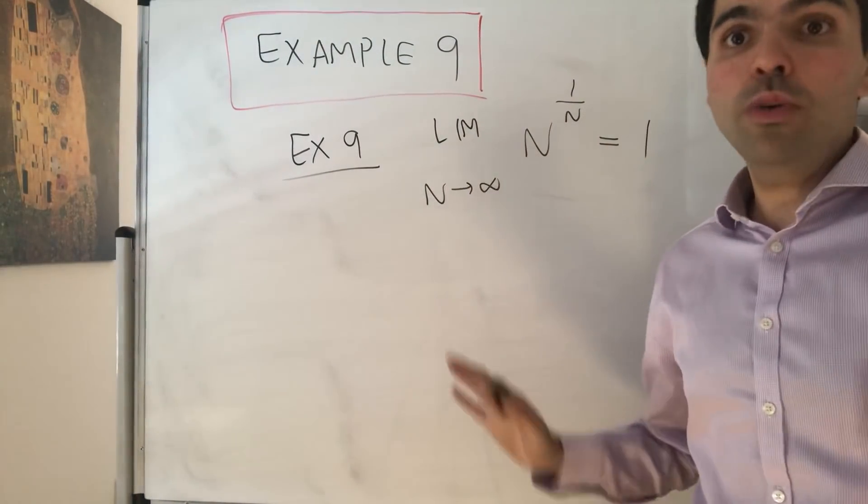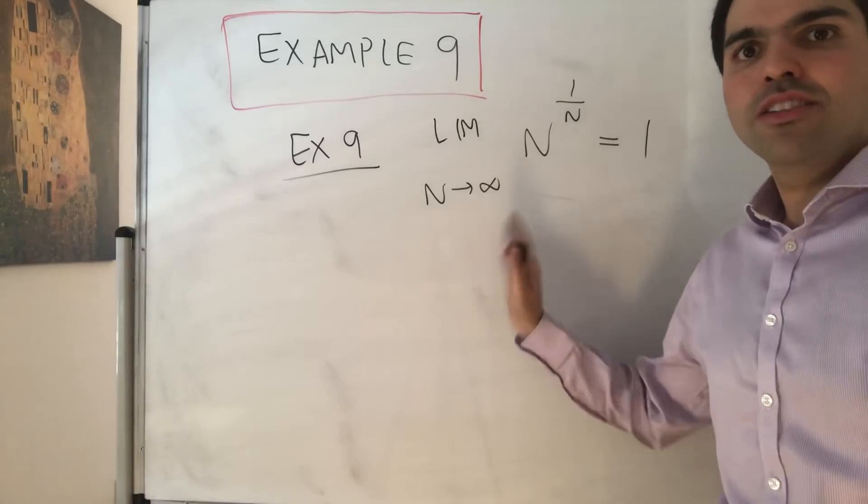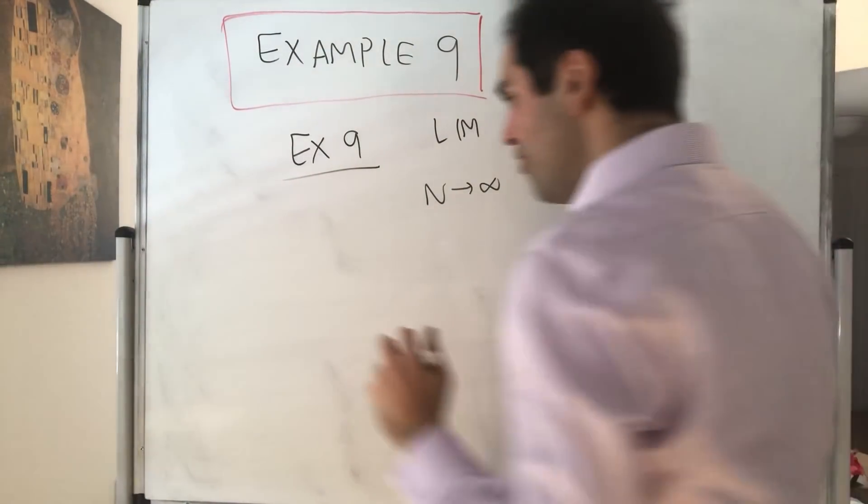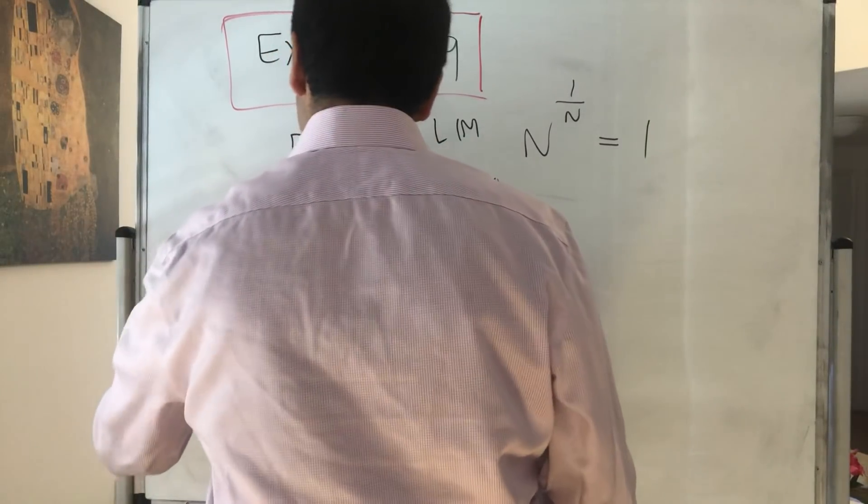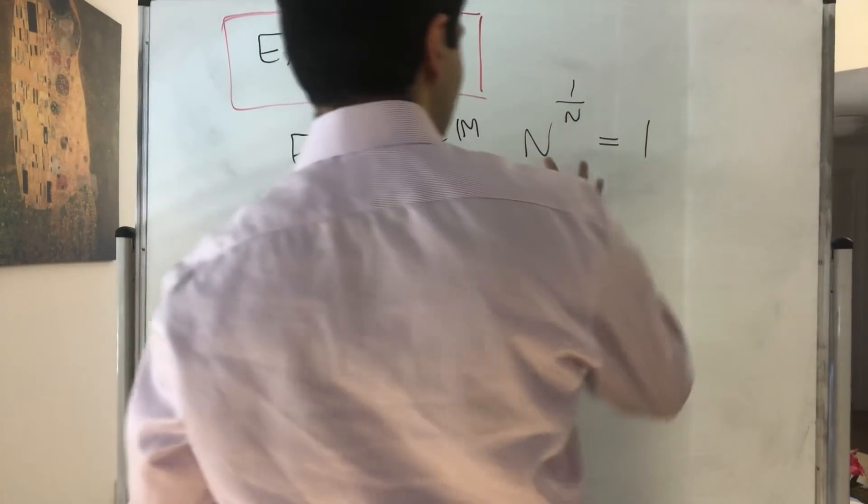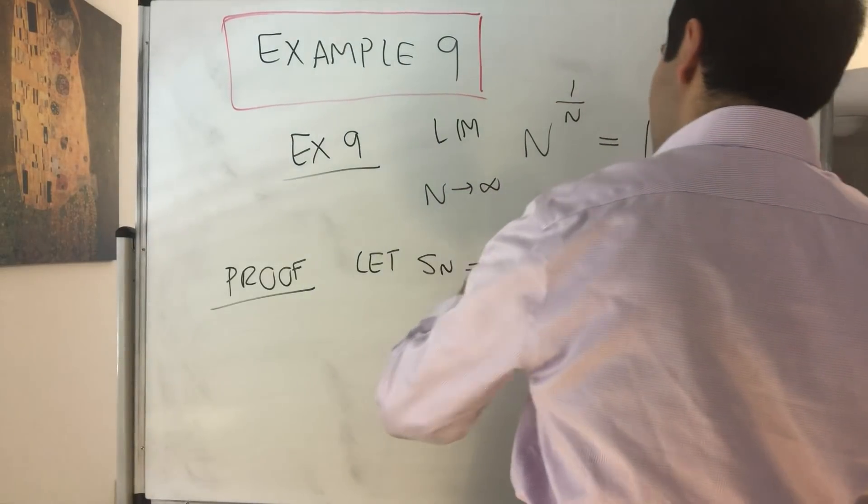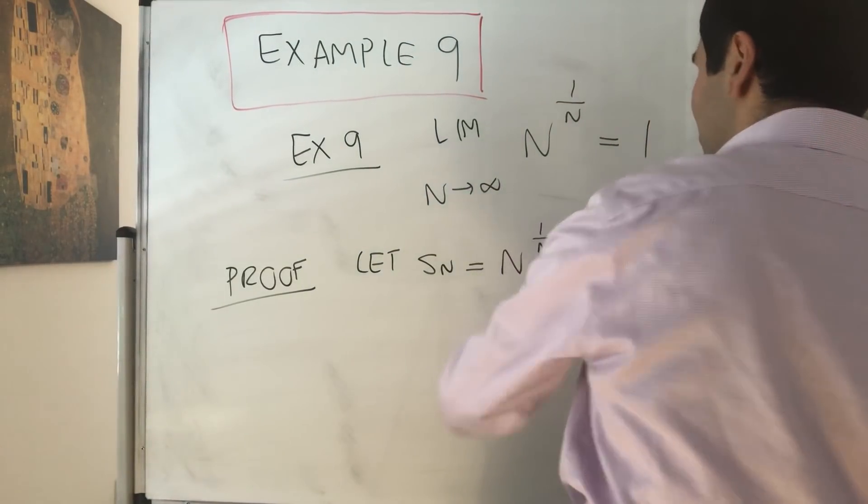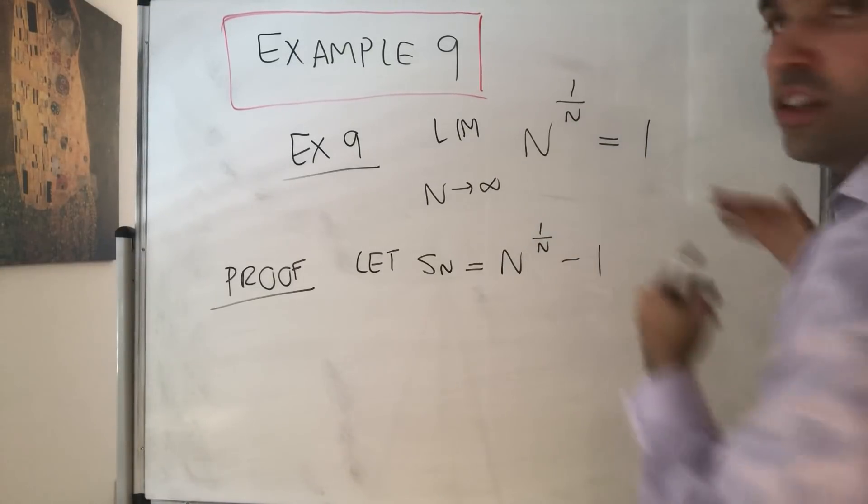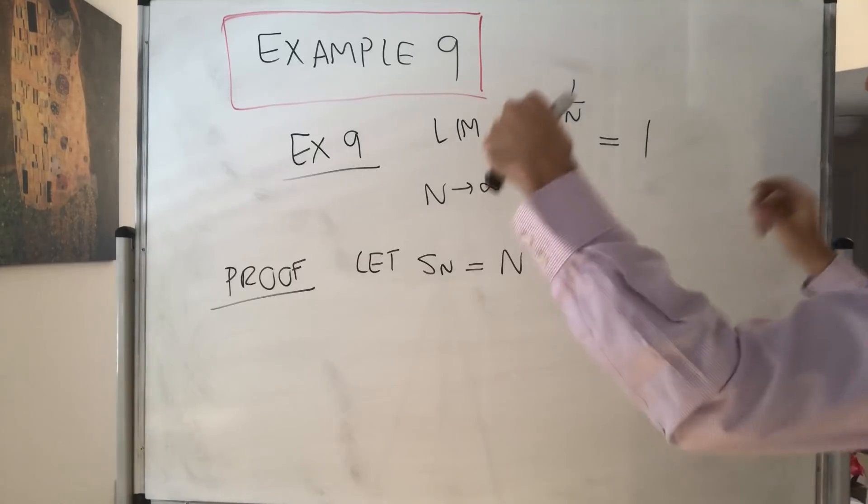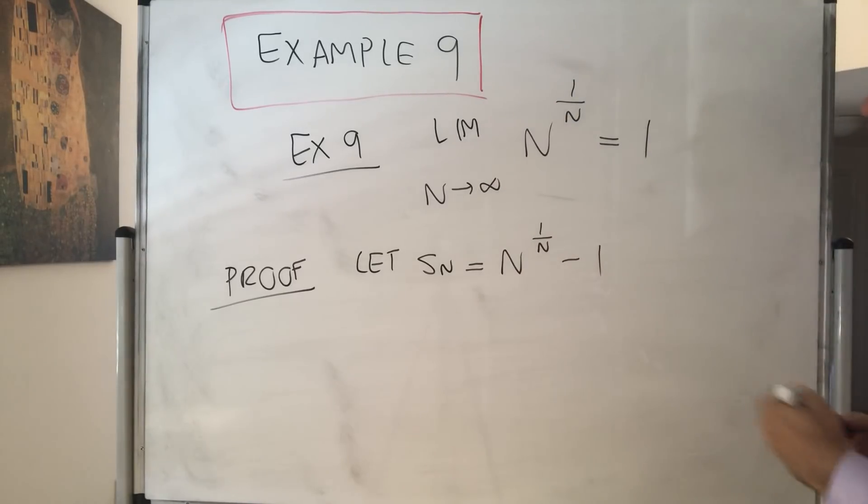And remember at this point we don't know what logarithms are so all those things are completely taboo to us. How are you gonna show this? So here's a proof. First of all let S_n be n to the 1 over n minus 1. And the idea is we want to use the squeeze theorem. So we would like to squeeze this quantity between two functions that go to zero.